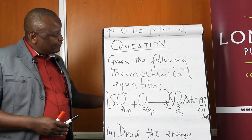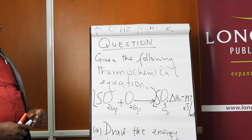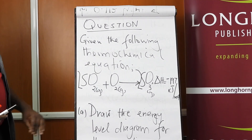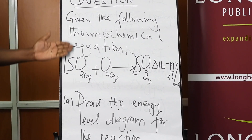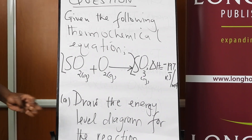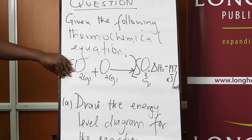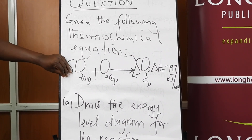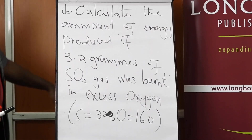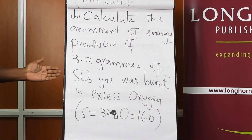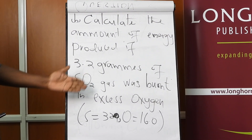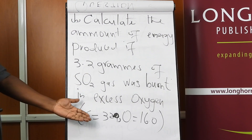There is a follow-up question for you to try and share on the platform. You are given sulfur dioxide gas combined with oxygen to give sulfur trioxide. You are asked to draw the energy level diagram for the reaction and further calculate the amount of energy produced when a given mass of sulfur dioxide is burnt in excess oxygen, using the provided constants.